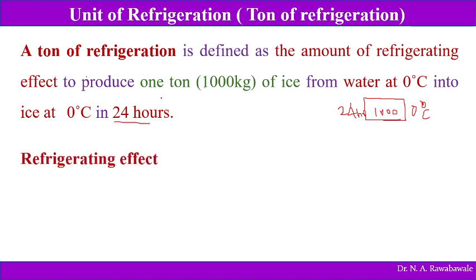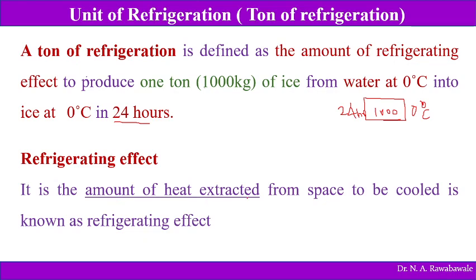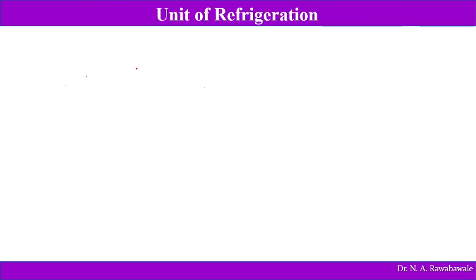The refrigerating effect is the amount of heat extracted — heat removed from a space to be cooled. The space from which you want to remove heat — the amount of heat Q removed from this space is known as the refrigerating effect. One ton of refrigeration is the unit of refrigeration — the amount of heat removed from 1000 kg of water at 0 degrees Celsius and converting it into ice at 0 degrees Celsius in 24 hours.